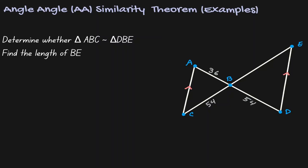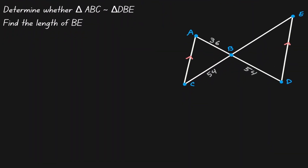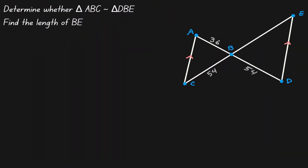Welcome. Let's take a look at some examples using the angle-angle similarity theorem. Let's consider the figure on the right-hand side. The first thing that we want to do is determine if triangle ABC is similar to triangle DBE.